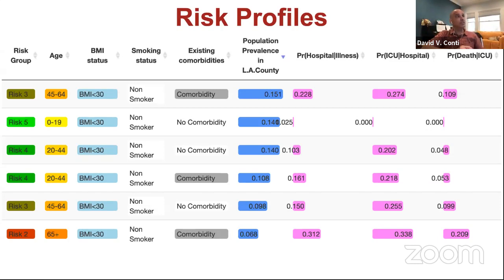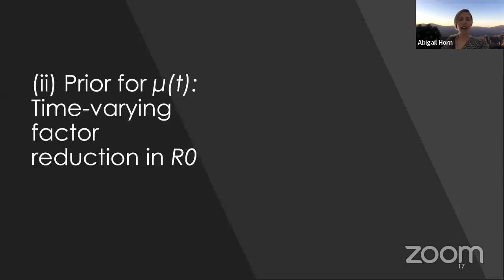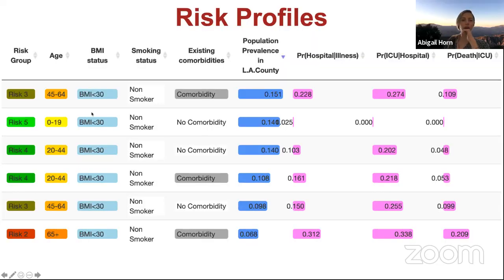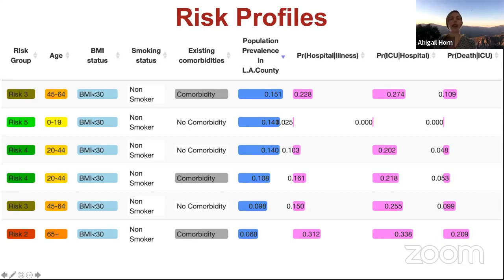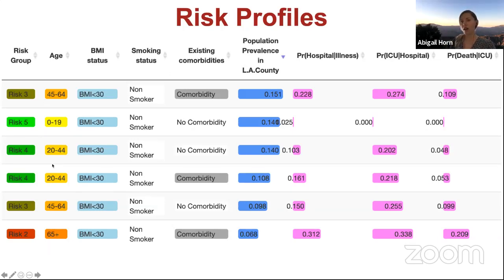The full risk profile table has around 40 meaningful combinations of risk factors, available on their website where you can search different combinations to find the corresponding illness severity probabilities for each.